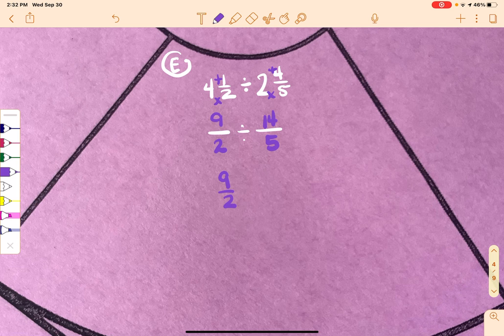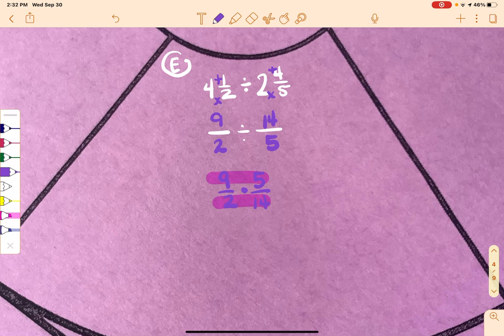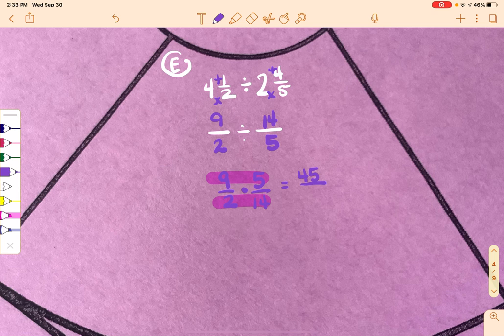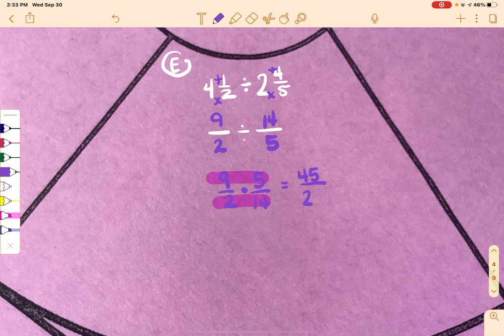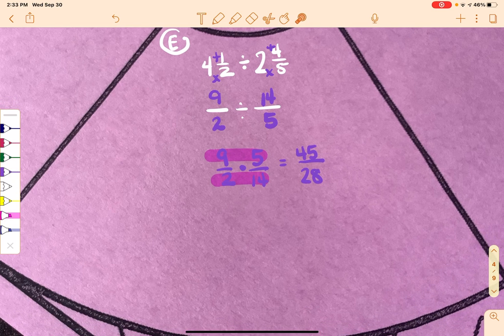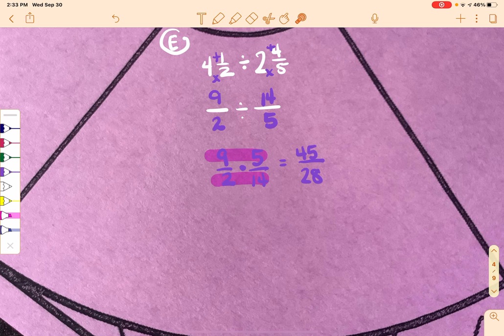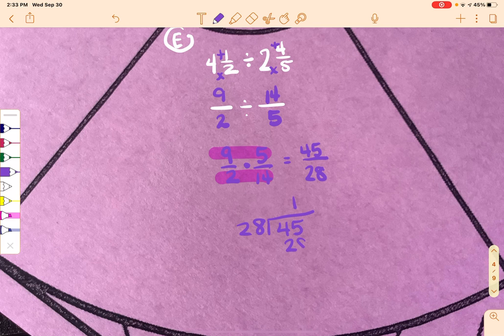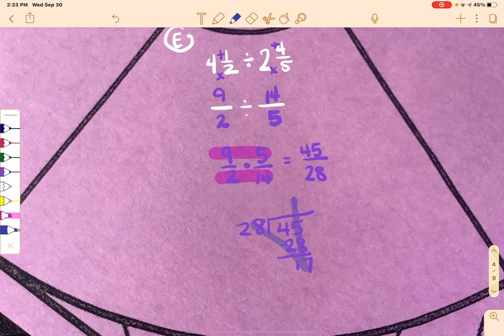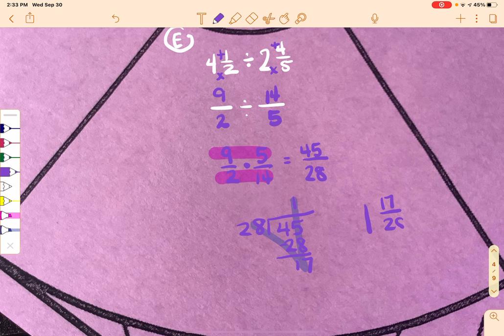Okay, now keep, change, and flip. And then we can multiply across. So 9 times 5 is 45. 2 times 14 is 28. If I were to put this into Desmos, it doesn't reduce, but because the top is bigger than the bottom, I'm going to have to go through and divide it out. So it goes in there one time with 17 left over. So it's going to be 1 and 17 over 28.